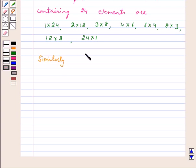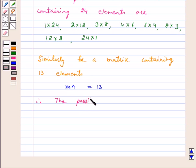Similarly, for a matrix containing 13 elements, we have mn equals 13. Therefore, the possible values of (m,n) are (1,13) and (13,1).